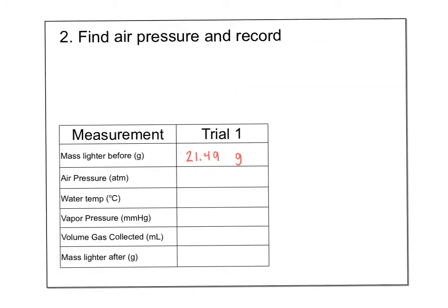I checked weather.com and the air pressure in Parker, Colorado today was 29.76 inches of mercury. Converting: 29.9 inches of mercury equals one atmosphere, so the air pressure today is 0.995 ATM. I got that number directly from the weather report for Parker, Colorado.